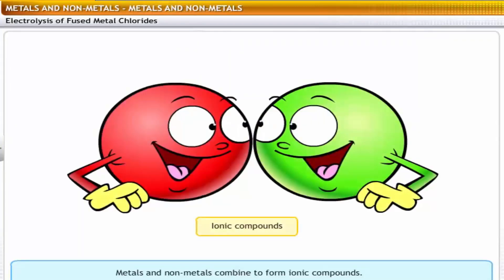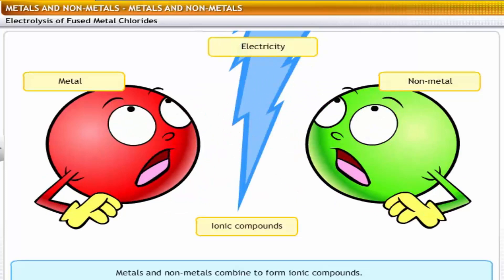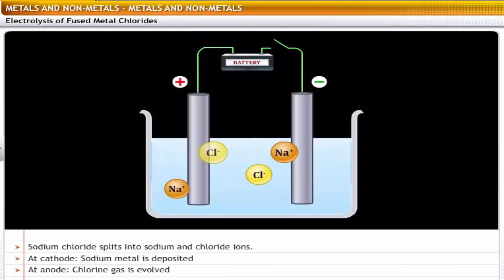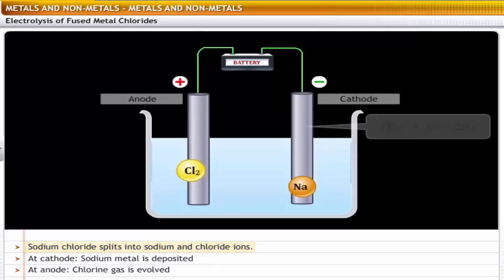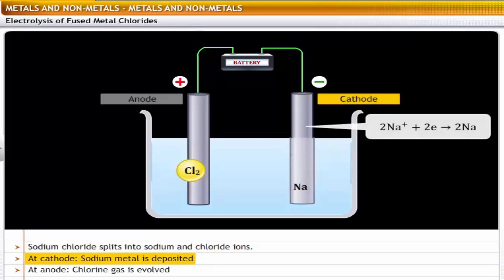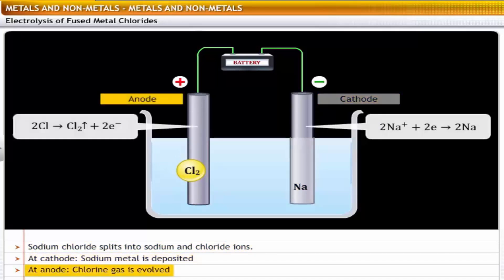In ionic compounds, the forces of attraction between the ions of metals and non-metals are very strong, making it difficult to separate the elements. You can overcome this force of attraction by passing electricity through the compound. The process of decomposition of a substance by passing electricity through it is called electrolysis. For example, on passing electricity, sodium chloride splits into sodium and chloride ions — sodium metal is deposited at the cathode, and the non-metal chlorine gas evolves at the anode.